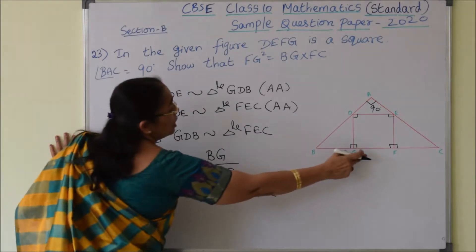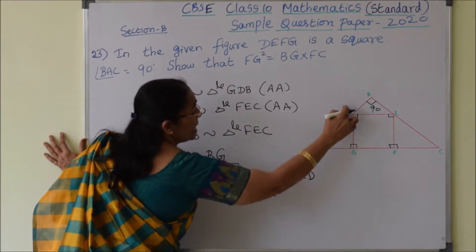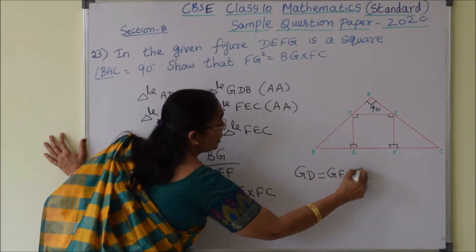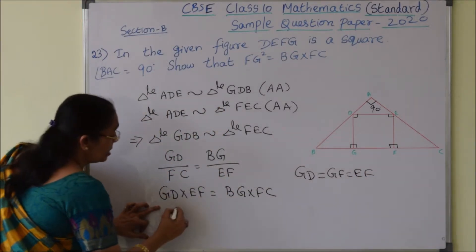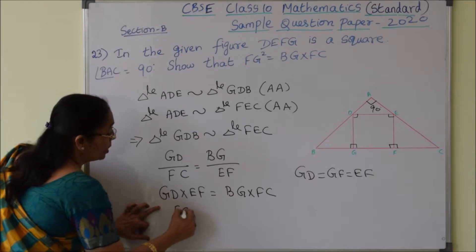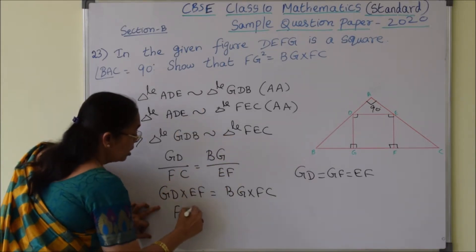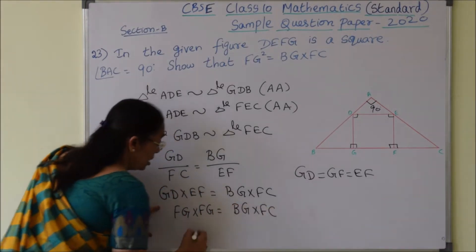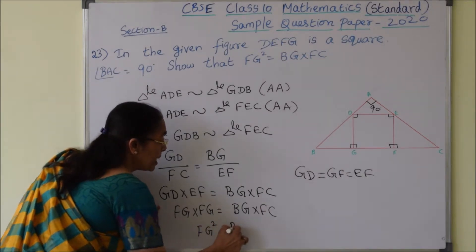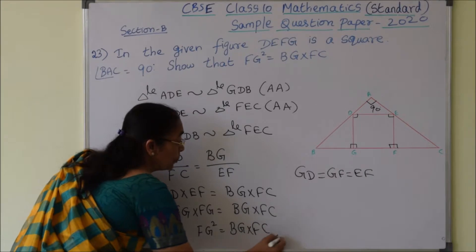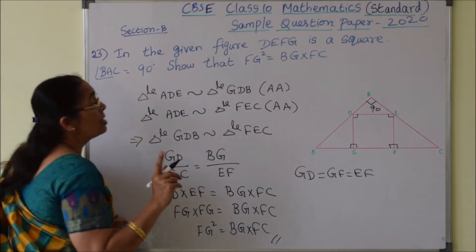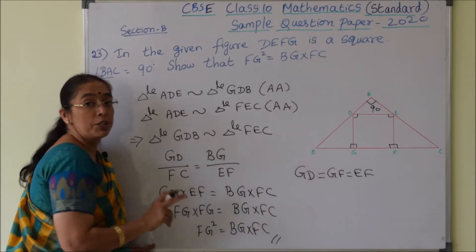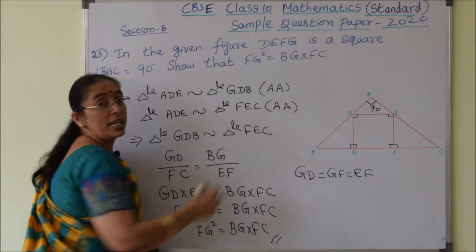Now GD is equal to GF because DEFG is a square, so GD is equal to EF. So I can replace GD by FG and EF by FG. Therefore FG into FG equals BG into FC, or FG square equals BG into FC. So we have proved the given condition. The key things to remember are which triangles to prove similar, writing the proper ratio, and using the condition that DEFG is a square.